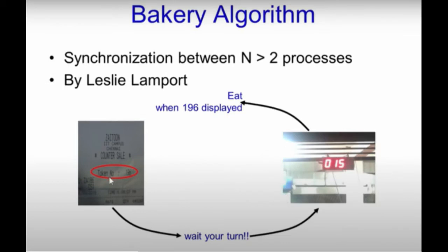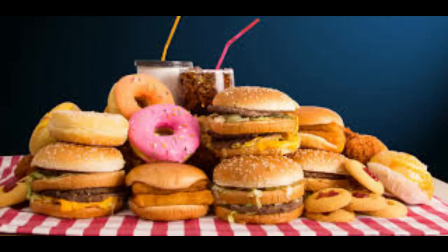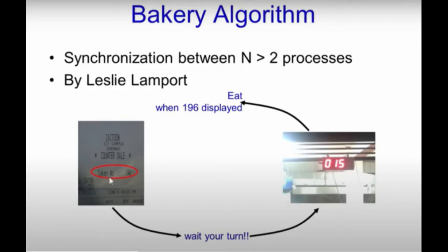After we receive our ticket, we need to wait until the ticket number is called. Once the ticket number is displayed, we can get our food. When we look at this from a synchronization aspect, we see that we're synchronizing the usage of a particular counter.